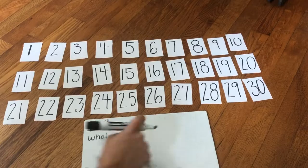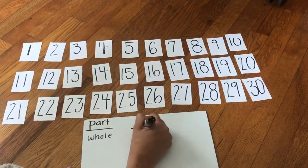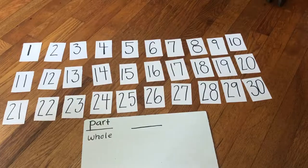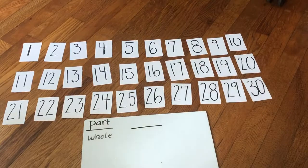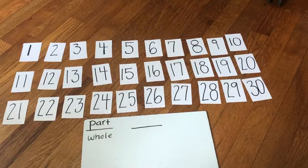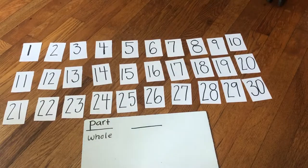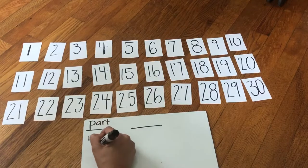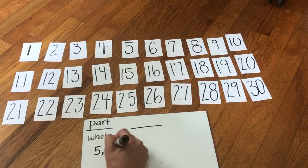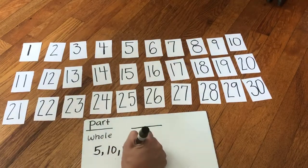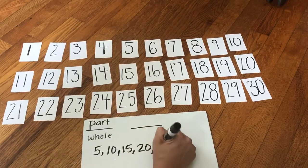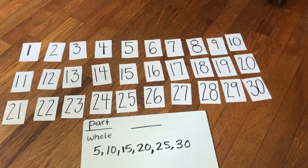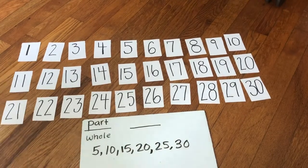All right, the next one says, what's the probability of choosing a multiple of five? So remember when we talked about doing multiple of, that means we have to list the multiplication tables of whatever they're asking for. And they asked for a multiple of five. So I'm gonna start and list my multiplication tables. Five, 10, 15, 20, 25, 30. And I only have 30 cards. So I'm gonna stop with 30.